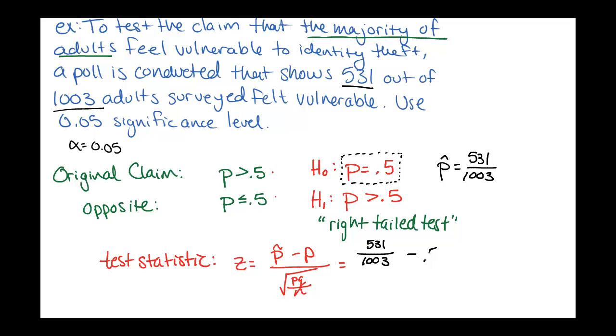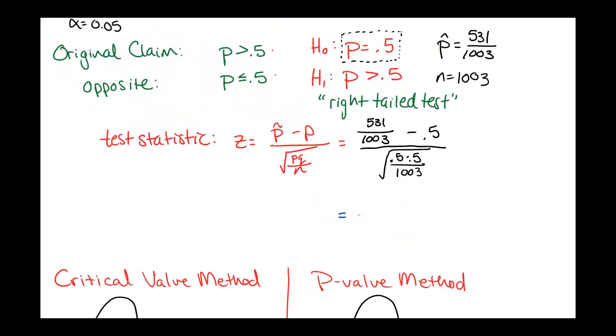So we're using 0.5 in this computation. And then same thing for the P and Q here. If P is 0.5, then Q is also 0.5. So we have the product of 0.5 times 0.5. N was our total number of people that we spoke to, which was 1,003 in this case. And then we have that square root on the bottom. So in this case, our test statistic comes out to 1.86295.